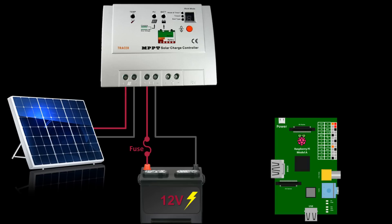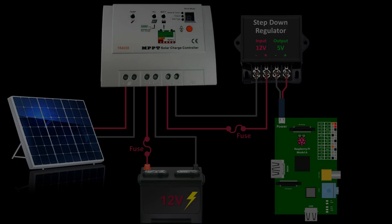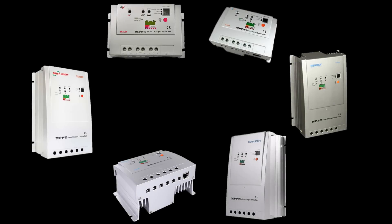An inline fuse should be placed within 15 centimeters of the battery's positive terminal. The controller has 12-volt DC load terminals which can provide power to the Raspberry Pi, as long as a step-down regulator is placed in line to lower the 12 volts down to 5 volts. This controller is a Tracer model 1210RN rated for 10 amps, rebranded by multiple vendors such as EP Solar, Saint Sonic, and Renogy.